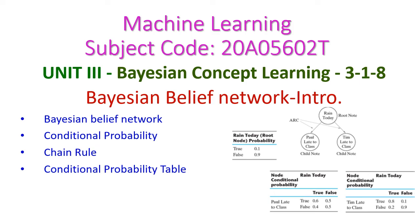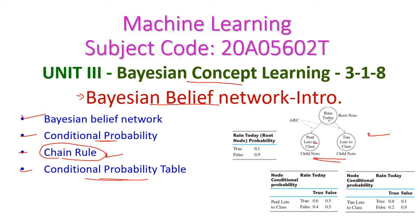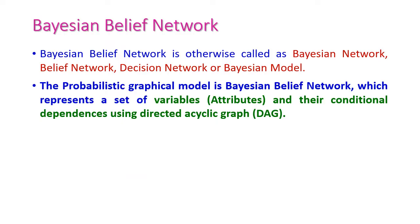In this machine learning class we will see the Bayesian belief network — a simple concept from the third unit on Bayesian concept learning. In today's class we will discuss what is Bayesian belief network, what is conditional probability, the chain rule and how it helps construct the Bayesian belief network, and the conditional probability table for all variables in the Bayesian network.